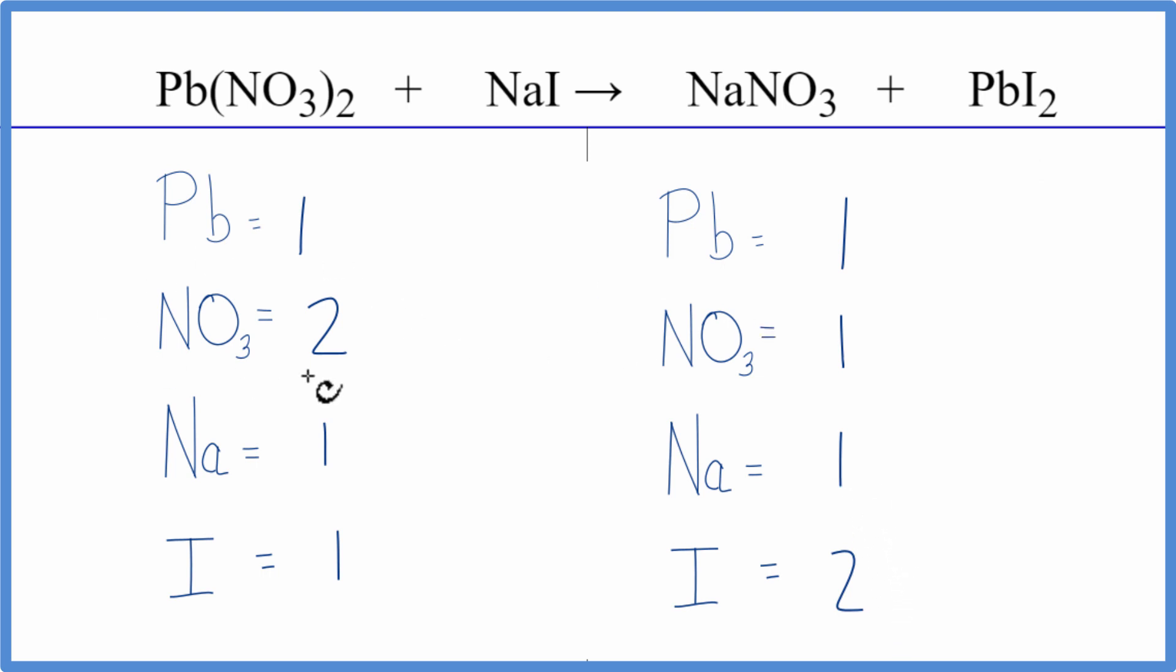We could put a two in front of NaNO3, so we would have one nitrate times two, which gives us two. So the nitrates are all balanced. One sodium times two gives us two sodium atoms.